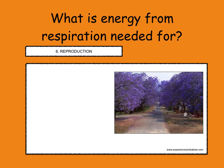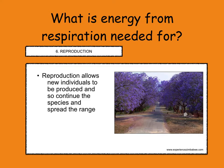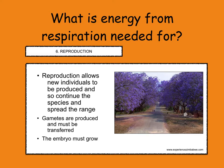Reproduction will be discussed in more detail next year. New individuals need to be produced for continuation of the species and spread of the range. Gametes — eggs and sperm — are produced and transferred. When they combine, an embryo is formed and needs to grow. Also, think about flowers on the jacaranda tree — they need energy from respiration to be produced. All these processes require energy from respiration.